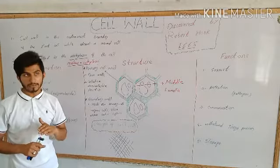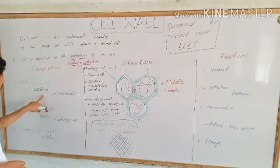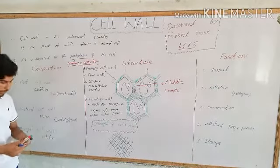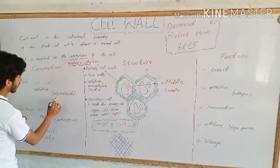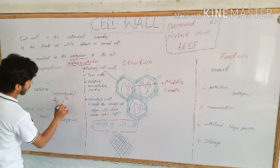In plant cells, the cell wall is composed of polysaccharides. Polysaccharide means carbohydrate.